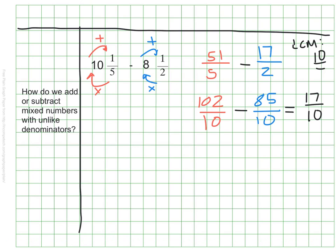So I know I have 17 tenths. That's still improper, so I'm going to turn that into a mixed number. 17 tenths can be the same as one whole, and then there are 7 tenths left over, and that's it. 10 and one-fifth minus 8 and a half is 1 and seven-tenths. It doesn't look like it from when we first saw the original number sentence, but that's what it is.